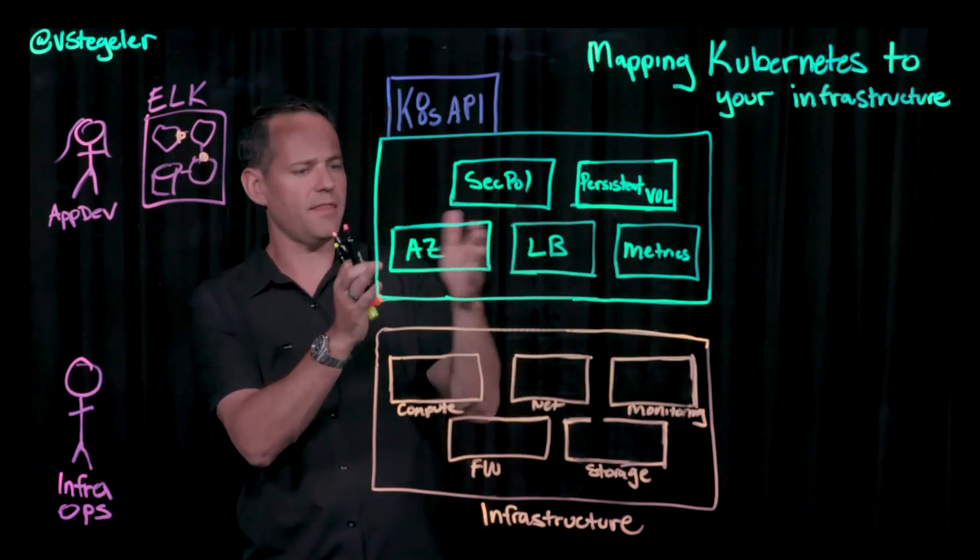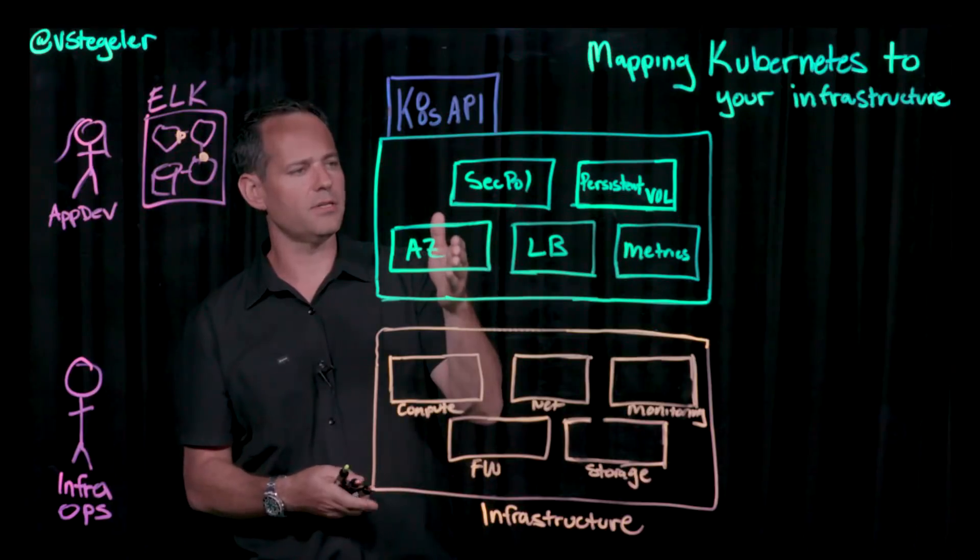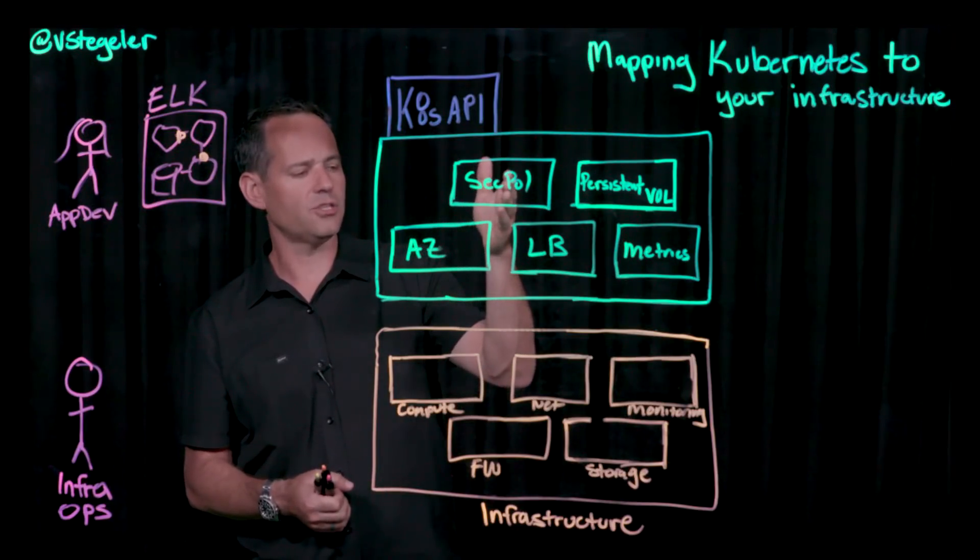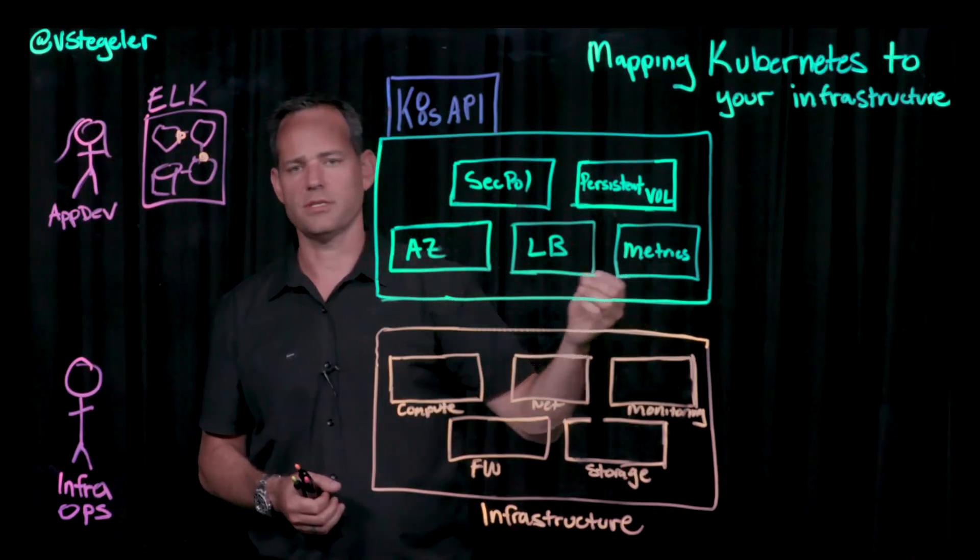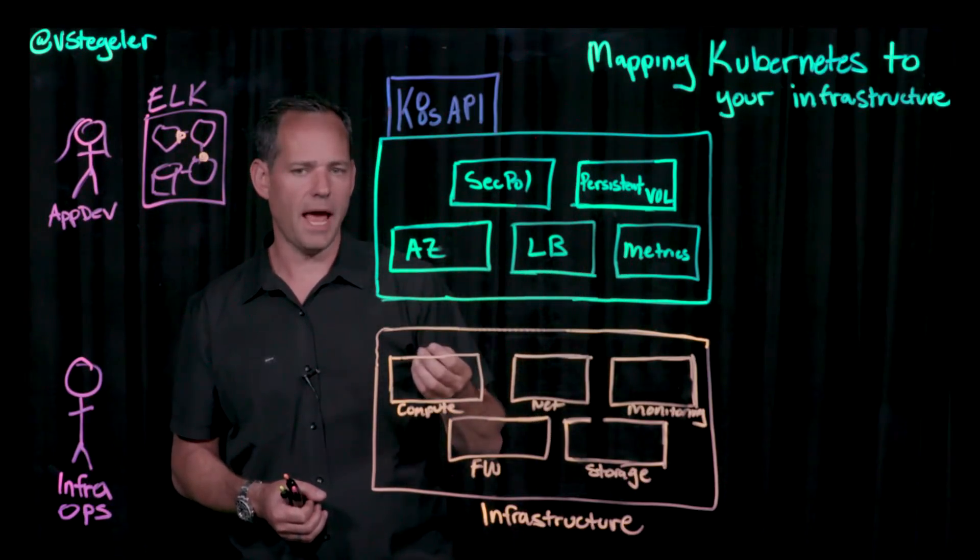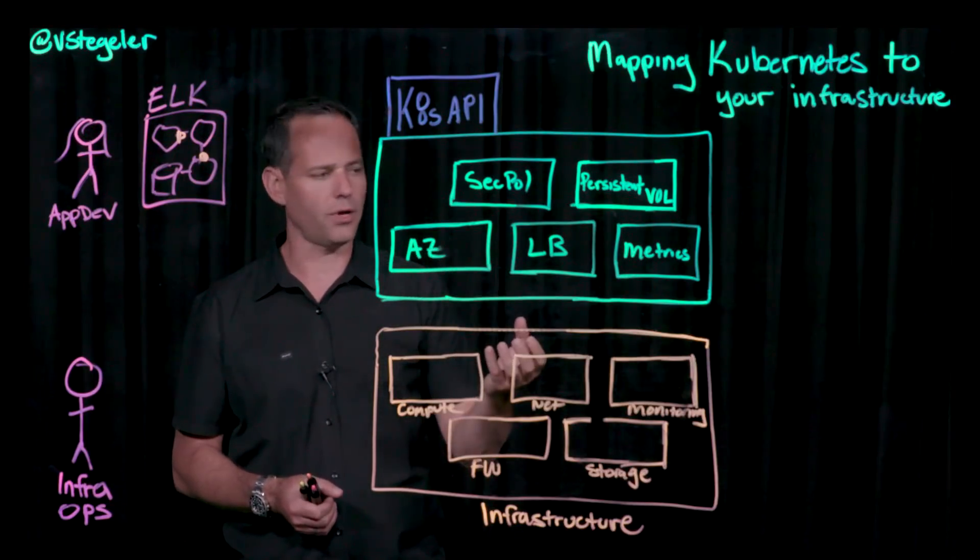Inside Kubernetes, I've got these various primitives: availability zone, security policy, load balancer, persistent volumes, and metrics. After I deploy my app, how am I going to understand how it's operating and working?